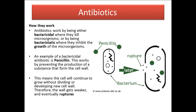By punching holes in the cell wall, this obviously causes osmotic lysis — stuff leaches out of the inside of the cell and therefore the cell cannot reproduce. Other types of antibiotics work in other ways by stopping reproduction and therefore slowing down the growth rate, particularly of bacteria.